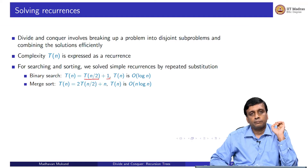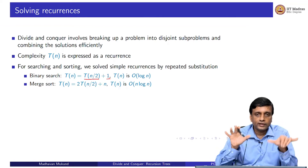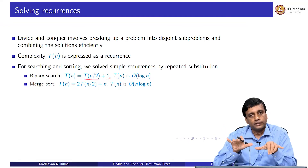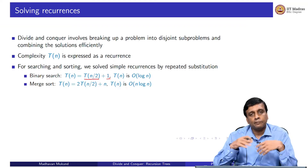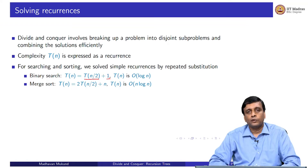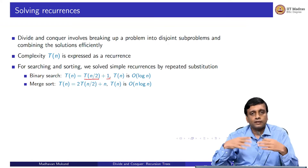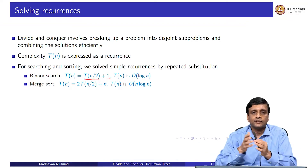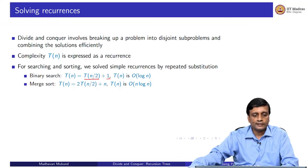For merge sort, we had to recursively sort the two halves and then merge them using a linear time merge operation. So it was 2·T(n/2) + n, and by expansion we get O(n log n). Both of these were relatively easy to solve by the naive method of repeatedly substituting and finding a pattern to encompass the whole calculation.